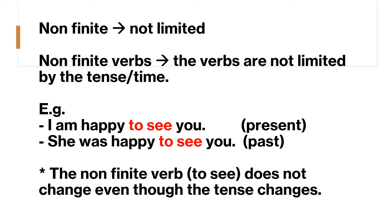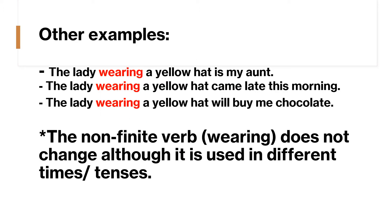Non-finite, or non-limited: non-finite verbs are the verbs that are not limited by the tense or the time. For example, 'I am happy to see you' in the present form, and 'she was happy to see you' in the past form. The non-finite verb 'to see' does not change even though the tense changes. Other examples: 'the lady wearing a yellow hat is my aunt,' 'the lady wearing a yellow hat came late this morning,' 'the lady wearing a yellow hat will buy me chocolate.' The non-finite verb 'wearing' does not change although it is used in different times or tenses.